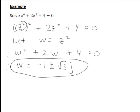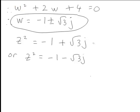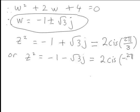Since w = z², it's z we're actually solving for. We've found z² = -1 + √3·j or z² = -1 - √3·j. The first thing to do is rewrite these in polar form. In polar form, -1 + √3·j = 2 cis(2π/3), and -1 - √3·j = 2 cis(-2π/3), where the angle is measured from the positive x-axis and 2 is the magnitude.